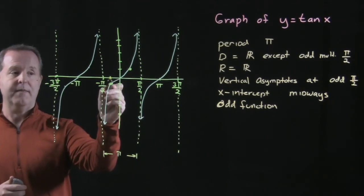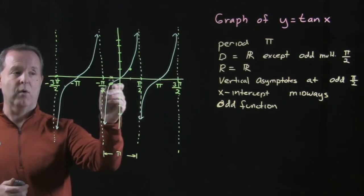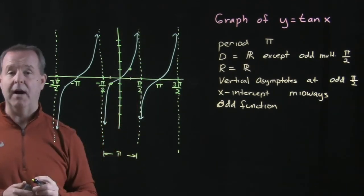So one-fourth of the way right there, I'll have a value of negative 1, and then three-fourths of the way through the period, I'll have a value at 1.